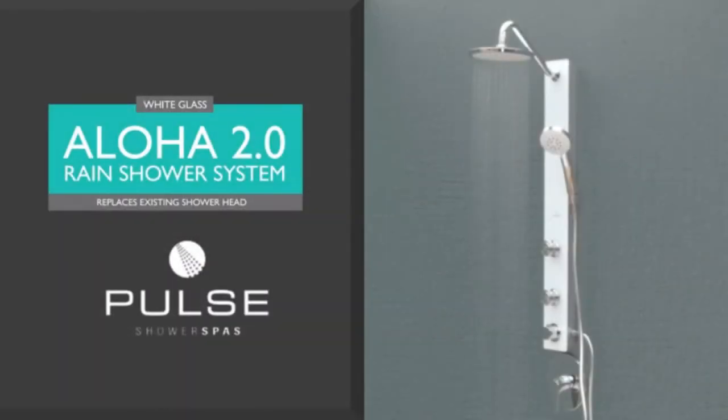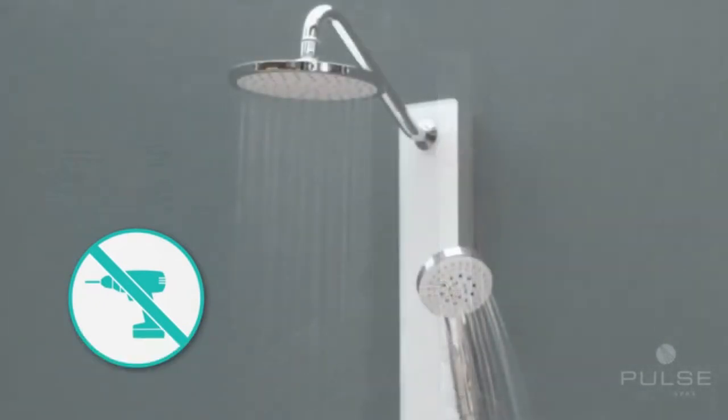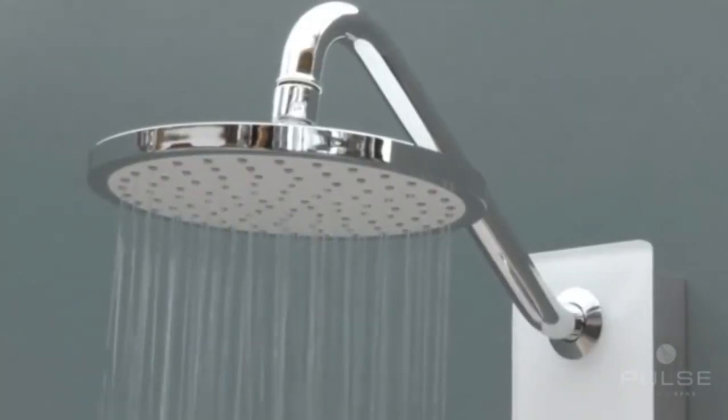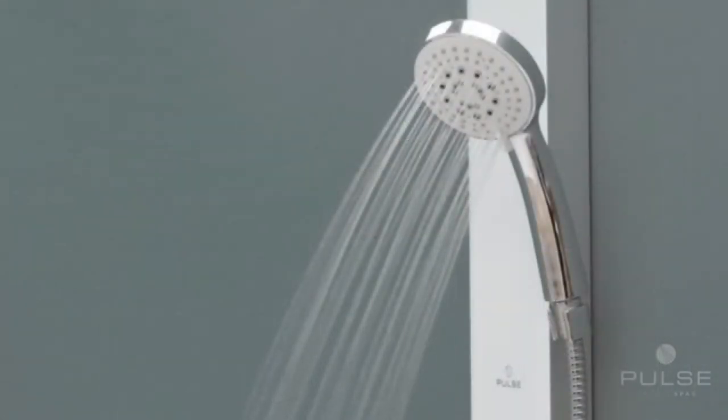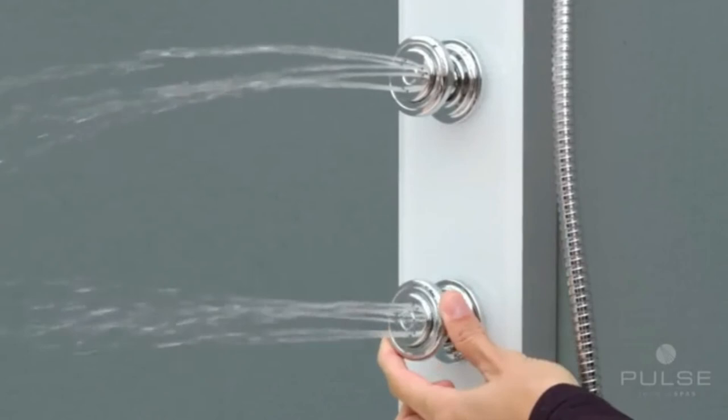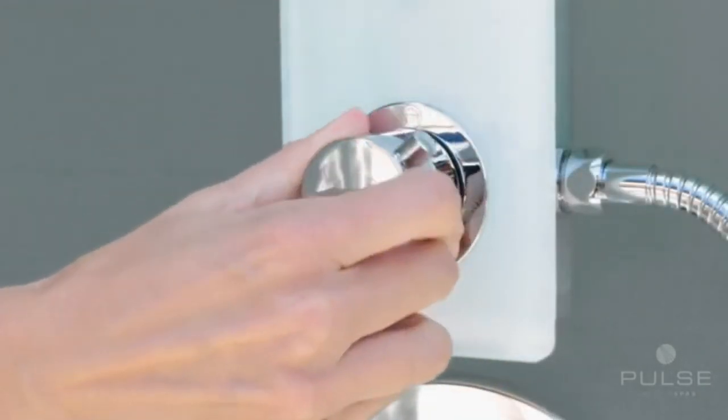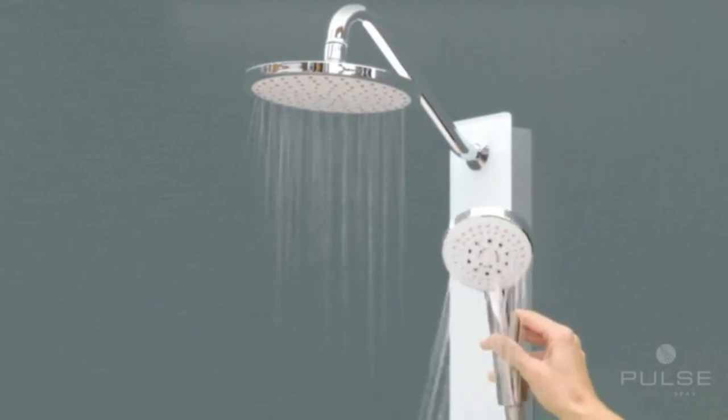Thank you for purchasing the Aloha 2.0 rain shower system from Pulse Shower Spas. The Aloha 2.0 shower unit is specifically designed for easy installation and replaces your existing shower head. There are no plumbing requirements needed for your existing hot and cold water valve. This retrofit shower system features an overhead rain shower, a multi-function hand shower, two adjustable body jets, and a diverter to change functions easily. Each function operates independently or in tandem for a more relaxing shower spa experience.